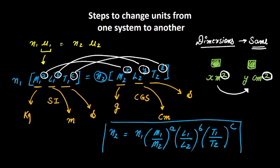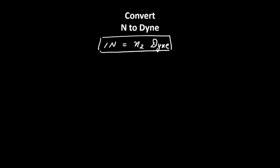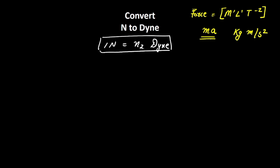This is the formula we use to find the unknown value N2. Let's apply it to convert 1 Newton to Dyne. The dimensional formula for force is M¹ L¹ T⁻². You can relate this to F = mass × acceleration: mass is in kilograms, acceleration is in meters per second squared, giving 1 dimension in mass, 1 in length, and negative 2 in time. The value of N1 is 1.